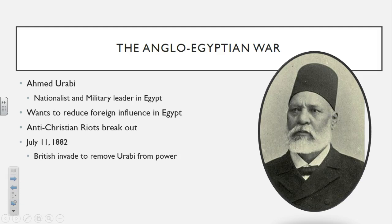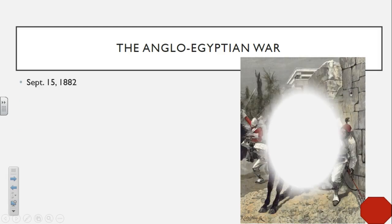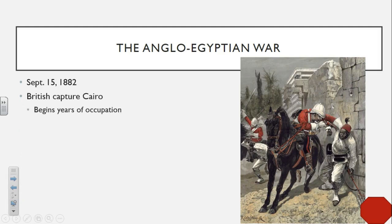On July 11, 1882, the British are going to come in and invade Egypt. They want to get Urabi removed from power, viewing him as a threat who is encouraging riots and protests. By September 15, 1882, the British are going to capture the capital of Cairo and remove Urabi from power. This is going to begin years of occupation in Egypt by the British.